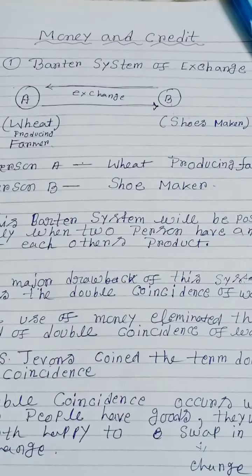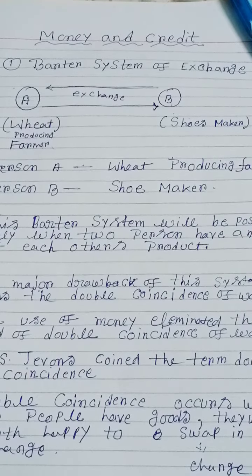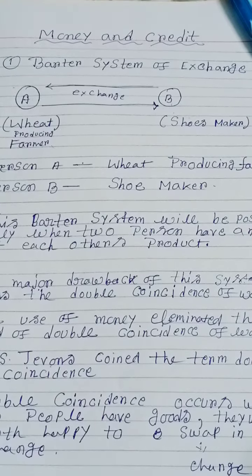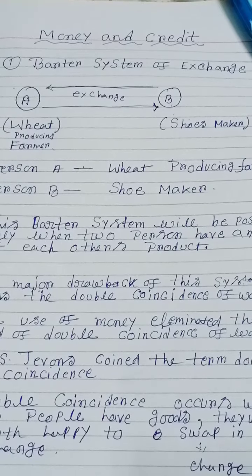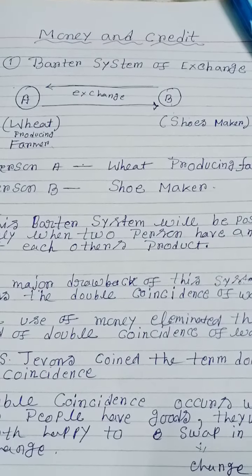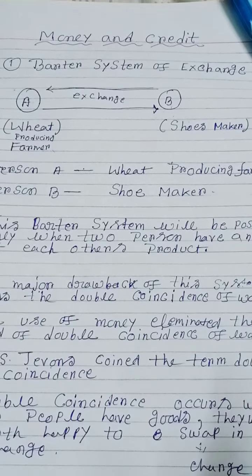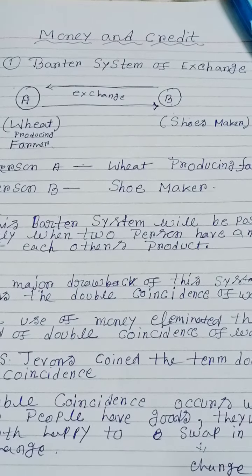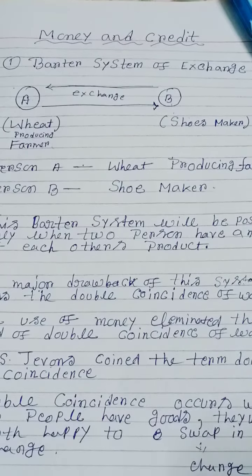One major drawback of this system was the double coincidence of wants. When two persons come in contact with each other and both have goods and are agreeable to exchange their products, that is double coincidence. But when two persons come together and both have products but are not happy with each other's products, then the exchange will not be possible, and that was the main drawback of this system.